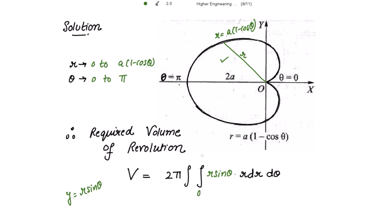And what are the limits for r? It is from 0 to a into 1 minus cos theta and the limits for theta are from 0 to pi. So multiplying this you will get r square sin theta over here.